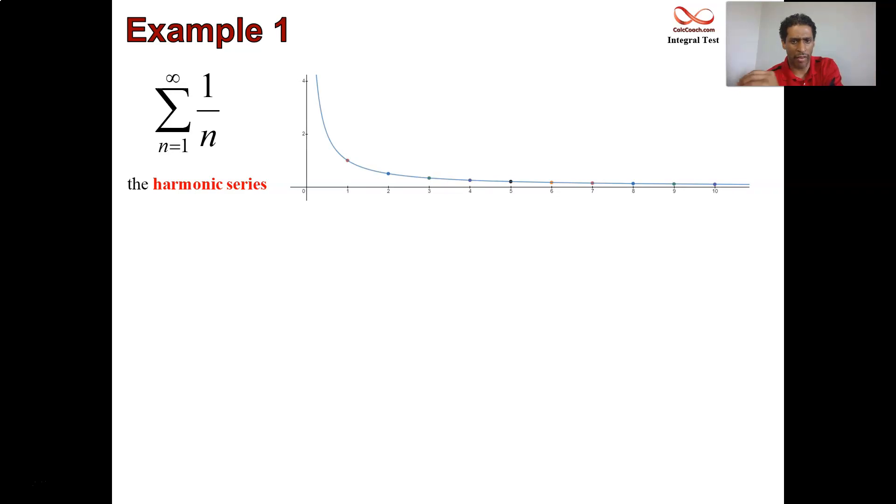And what we have there, the points represent when n is one, the output of a sub n. When n is two, the output of a sub n. And then drawn through there is the function f of x, which is replace the n with the x, and what we get is one over x. This function one over x is continuous, so long as you're from one to infinity. It's positive, as long as you're from one to infinity, and it is decreasing.